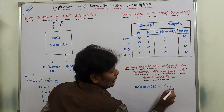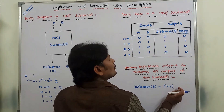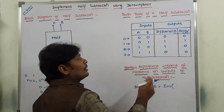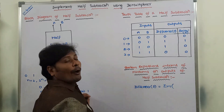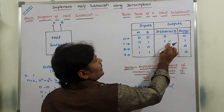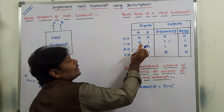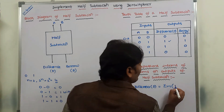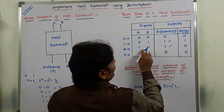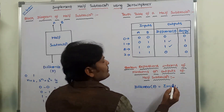Sigma means sum and small m means minterms. We observe the difference output column: where 1s are present. Here 1 is present at input combination A=0, B=1, which is minterm 1. Next, 1 is present at input combination A=1, B=0, which is minterm 2. So difference = sigma m(1, 2).